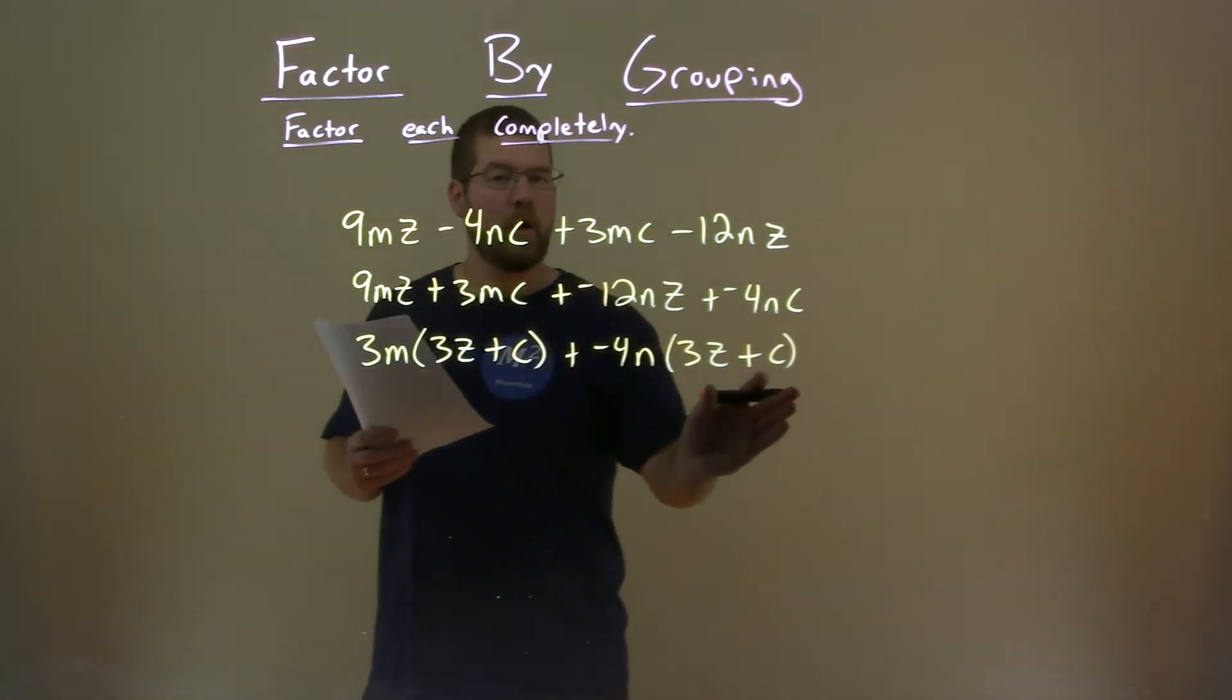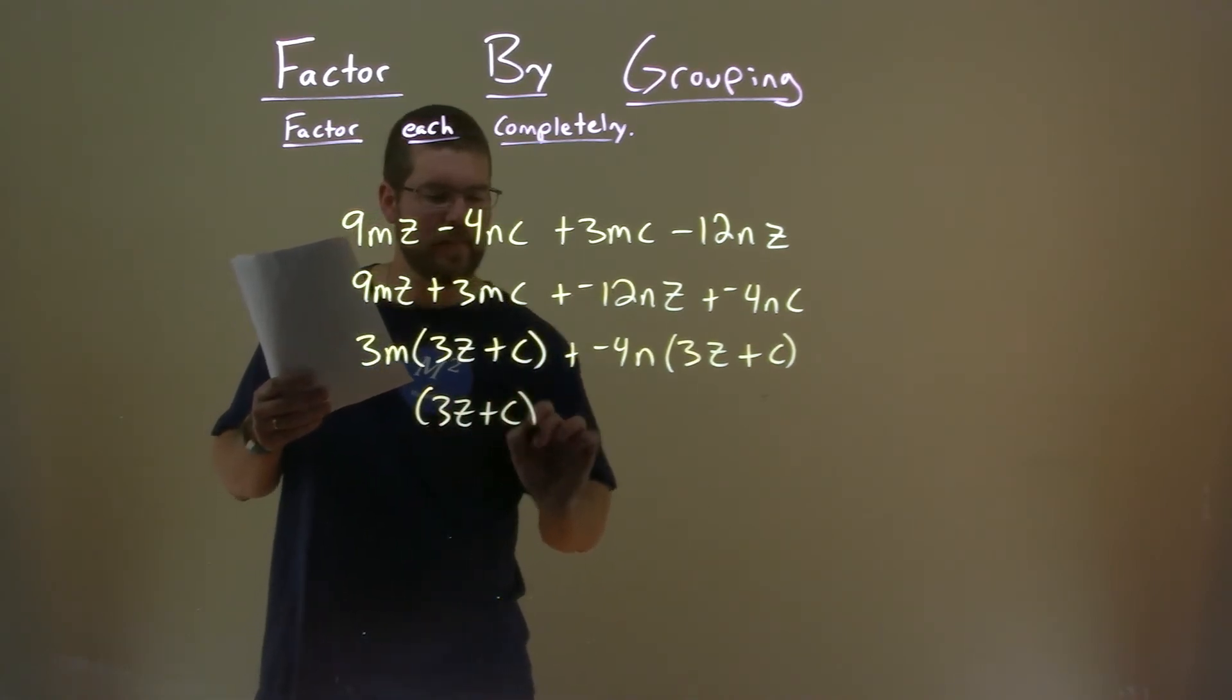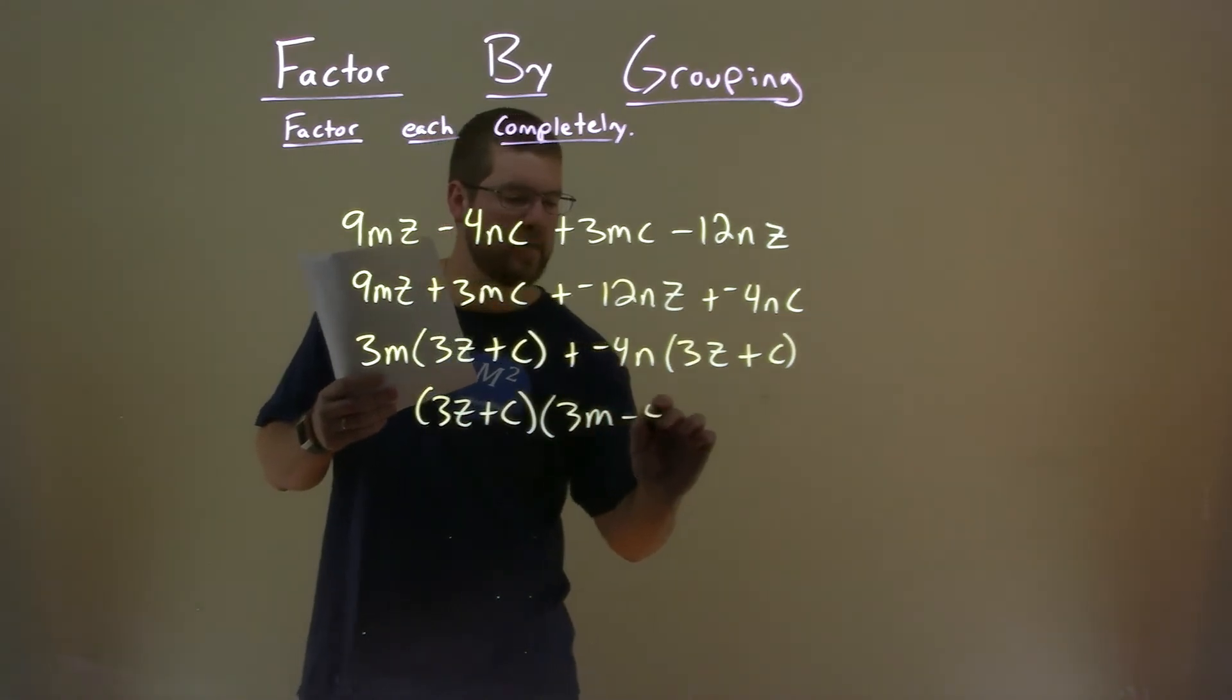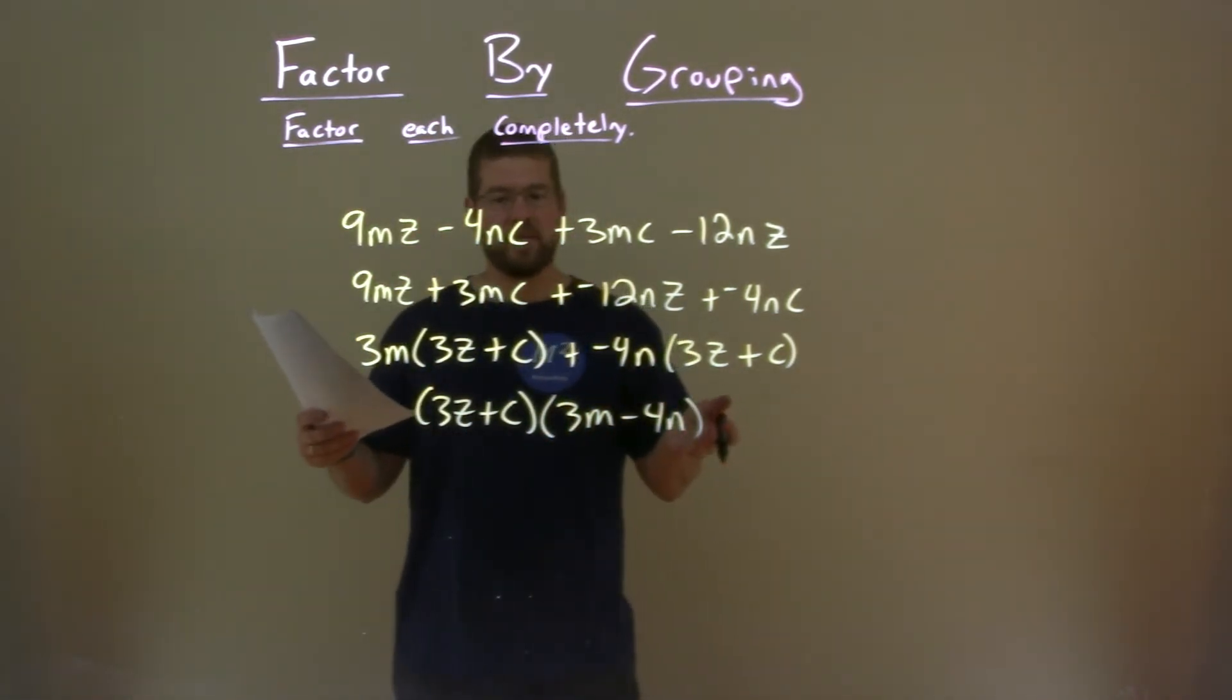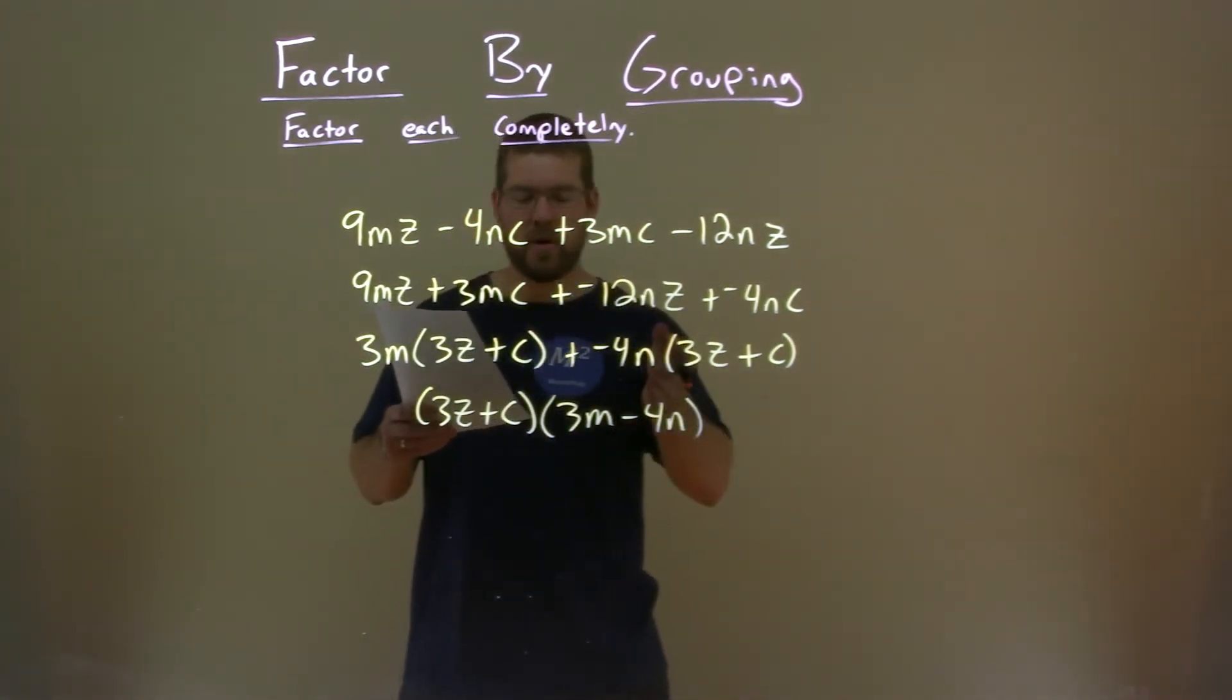Pull that out from both parts, right? 3Z plus C, and I'm left with this: 3M minus 4N, bringing that down. And now we actually have our final answer: 3Z plus C times 3M minus 4N.